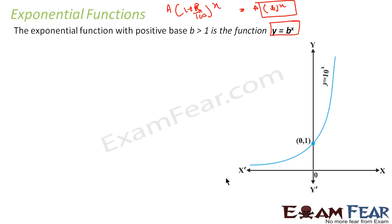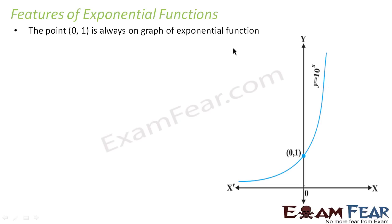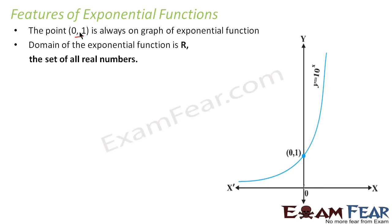Let's take the graph of such a function where b is 10, so y = 10^x. I have drawn the graph — it looks like this. It starts and y is never negative. See, y is never negative. And the moment it crosses 1, it shoots up like anything and goes to infinity. So there are some features of this exponential function. The first is the point (0, 1) is always part of the graph — no matter what value of b you take, this point will always be on the graph.